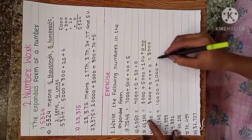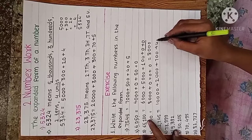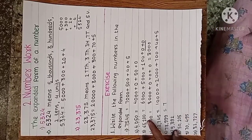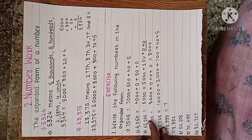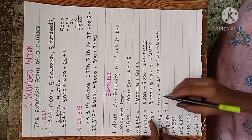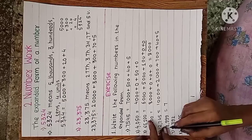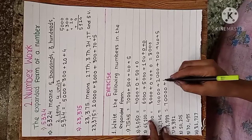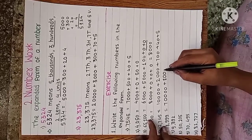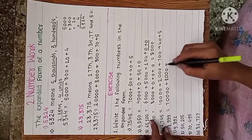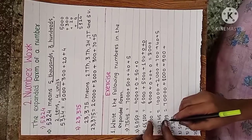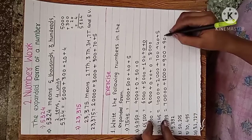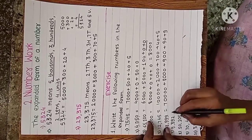Plus 2000, plus 1000, plus 700, plus 40, plus 5. Now next: 78999 — then how many digits after 7? One, two, three, four — plus 8000, three digits — then 900, plus 90, plus 9. This is the expanded form.